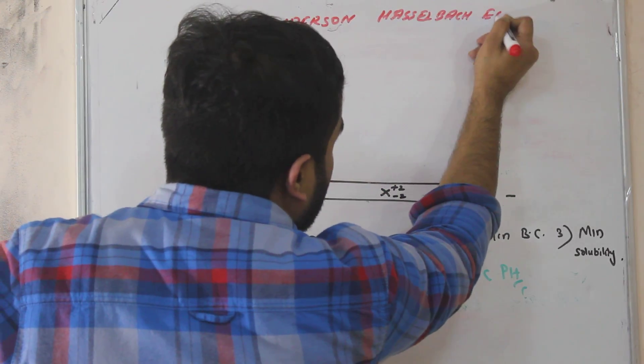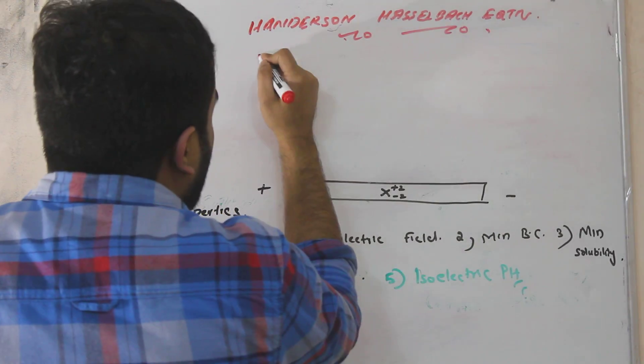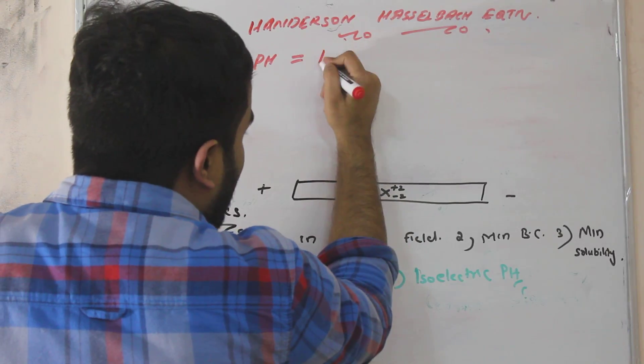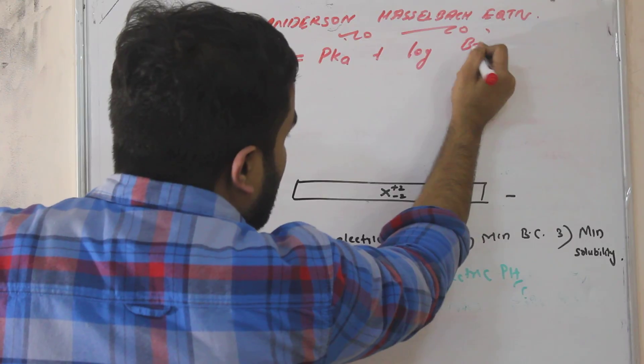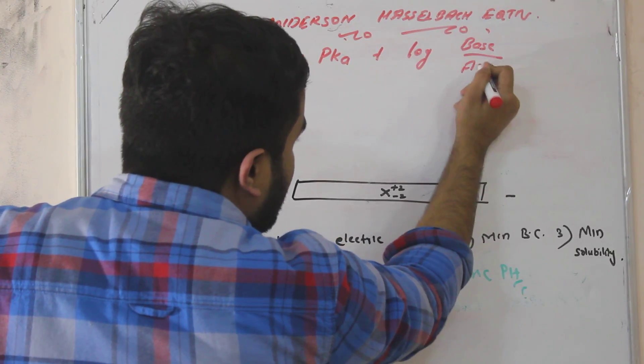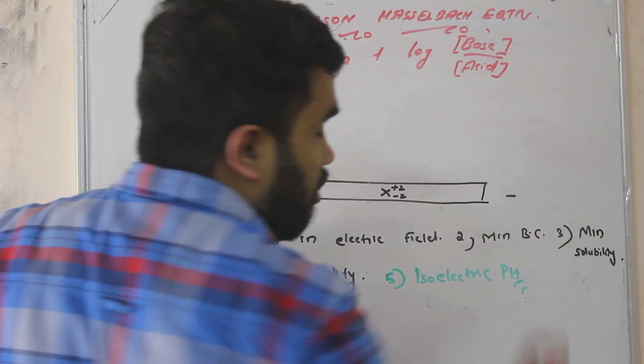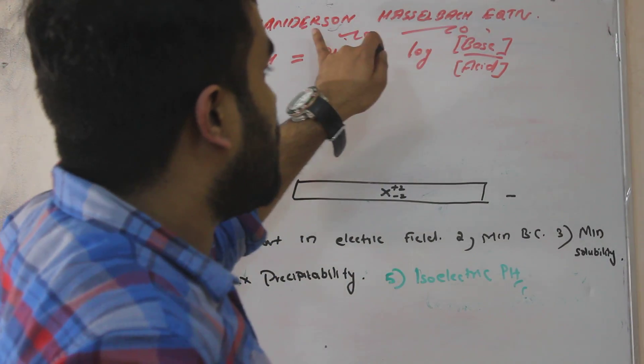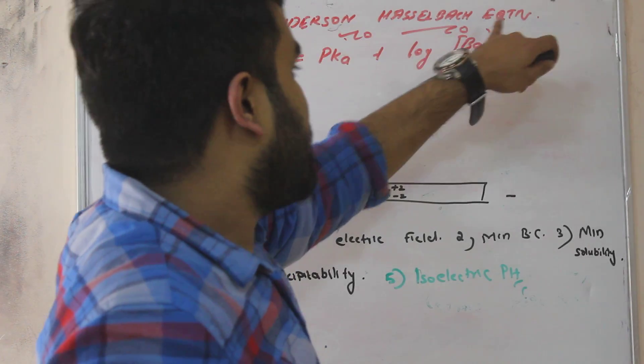Henderson-Hasselbalch equation. What was this equation for? This equation is for finding out the pH. Here pH we can find by pK plus log base by acid. So as a medical student we are not going to...